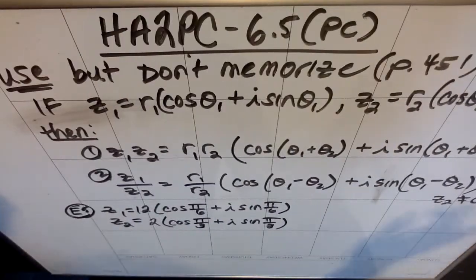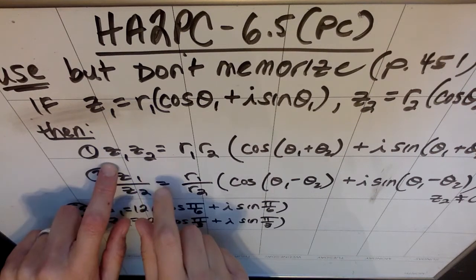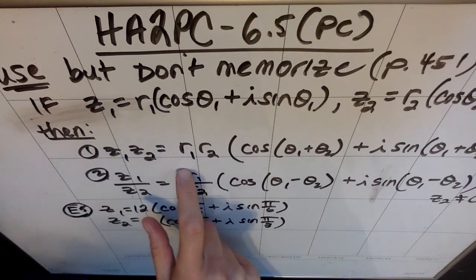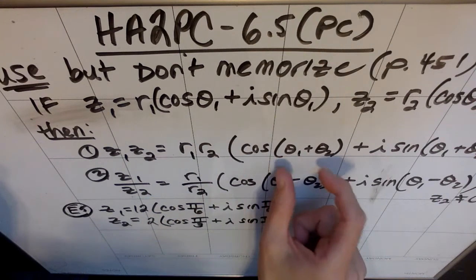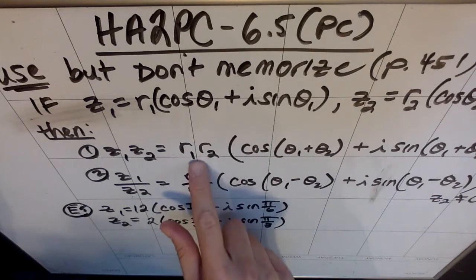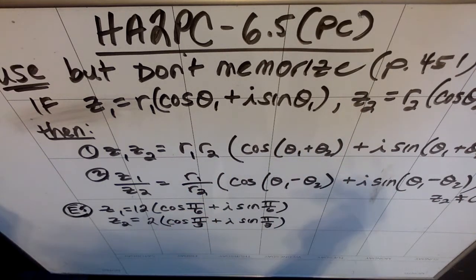So if we want to multiply two complex numbers that are written in trig form, it's actually pretty easy. What we do to multiply complex number 1 and complex number 2 is we multiply the r's, which would be the moduli, and then within the cosine and the sine, we do the sum of the arguments. So r1 times r2, and then in parentheses, cosine of the quantity theta 1 plus theta 2 plus i sine of the quantity theta 1 plus theta 2.